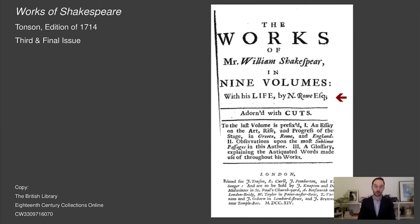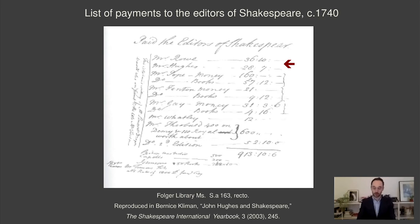Scholars have long suspected that Rowe's involvement in the 1714 edition of Shakespeare's works was minimal. Yet this hypothesis has, until now, rested on a single piece of documentary evidence: a manuscript receipt held at the Folger Shakespeare Library entitled 'Paid to the Editors of Shakespeare.' It lists a certain Mr. Hughes as the recipient of £28.07. Scholars have deduced from this list that it was the slightly more obscure playwright and librettist John Hughes, and not Nicholas Rowe, who edited the 1714 edition of the works.